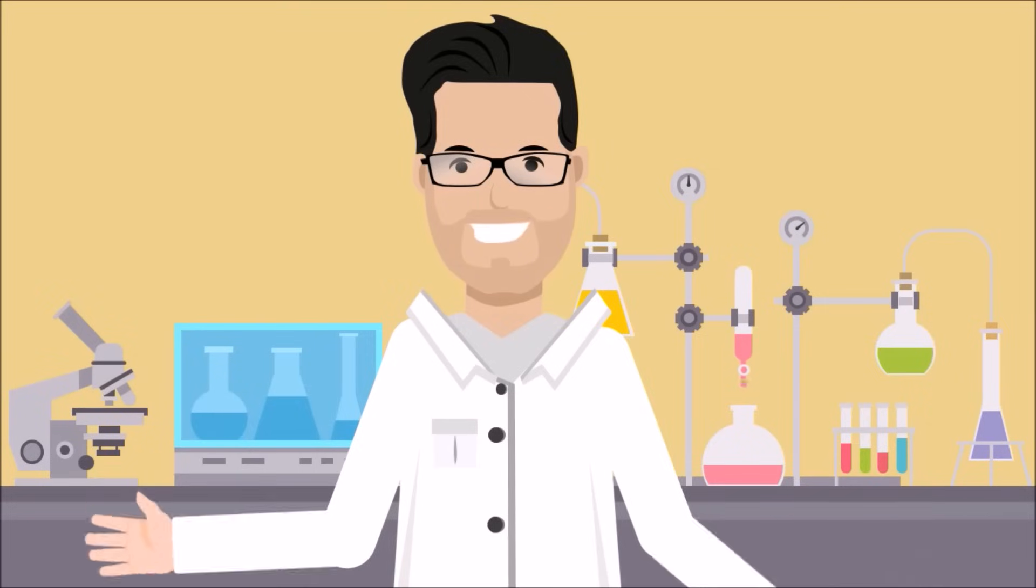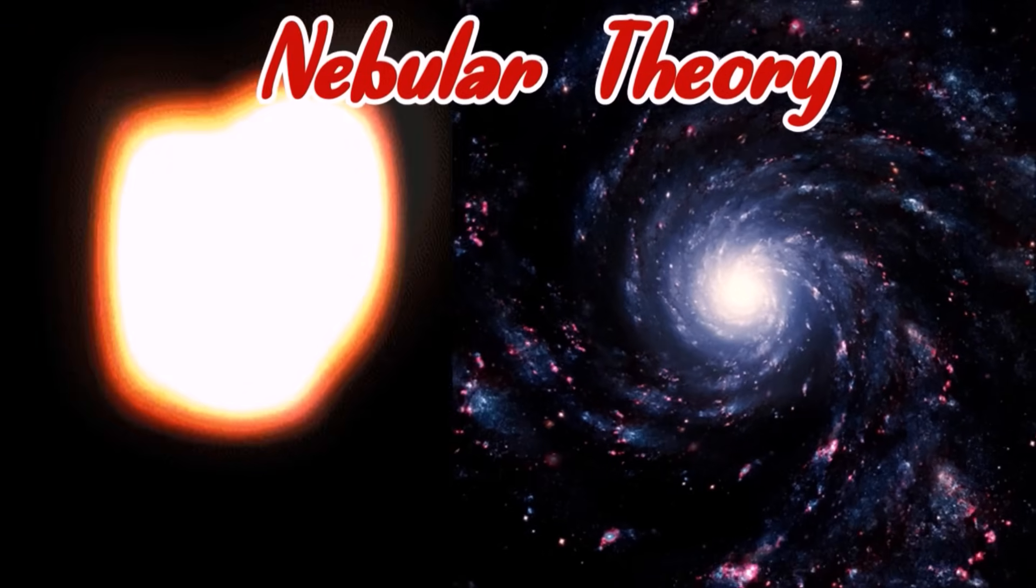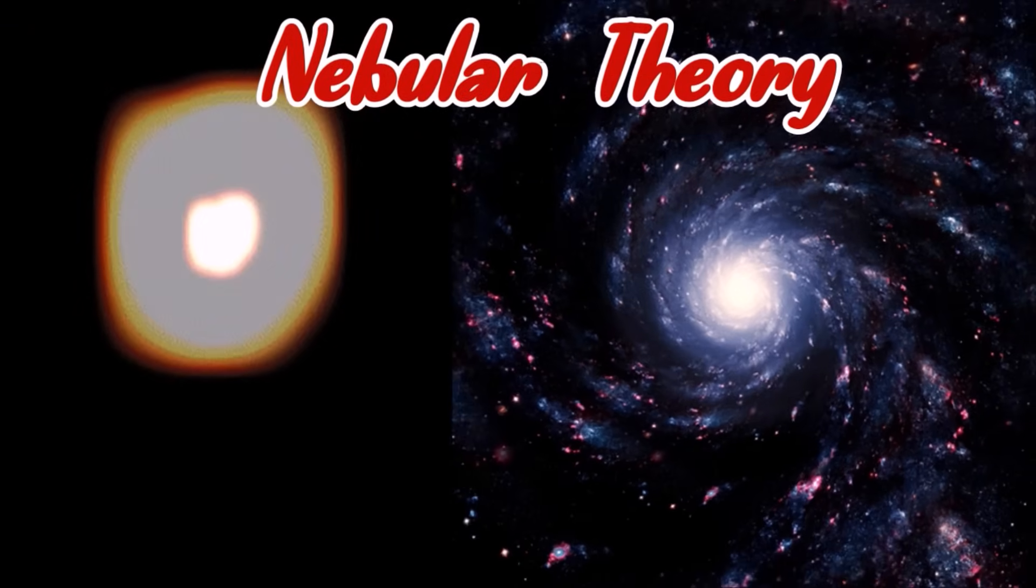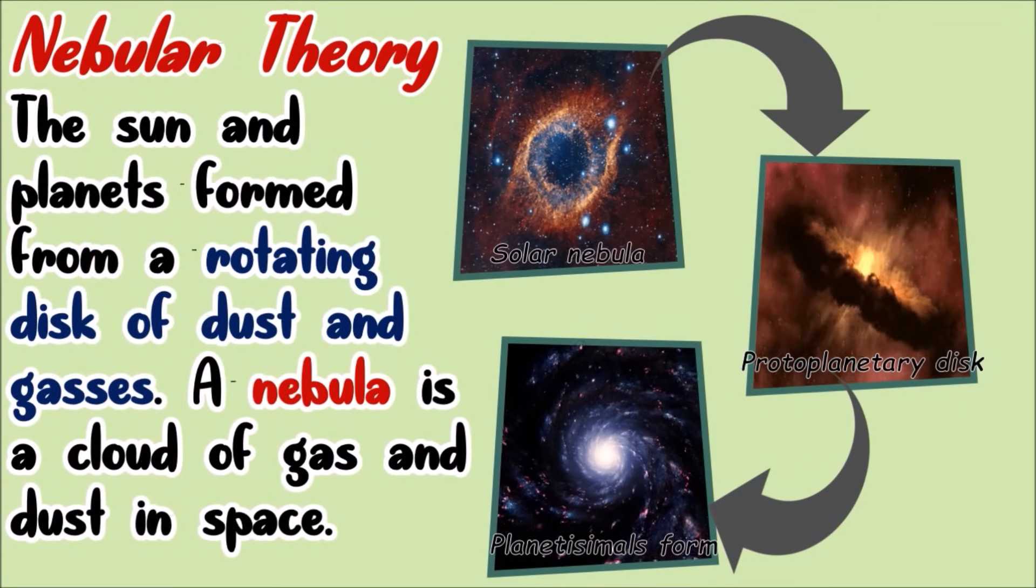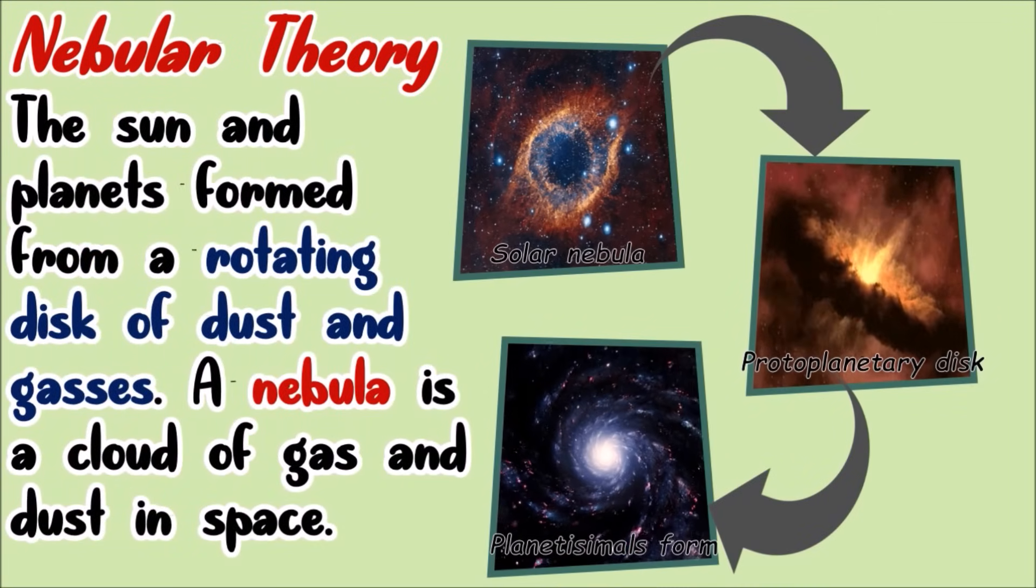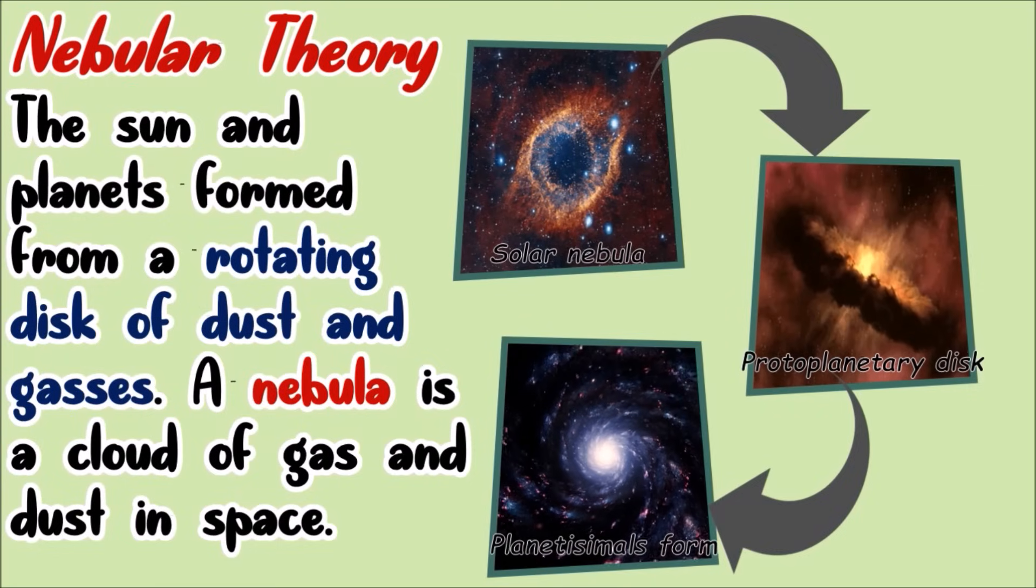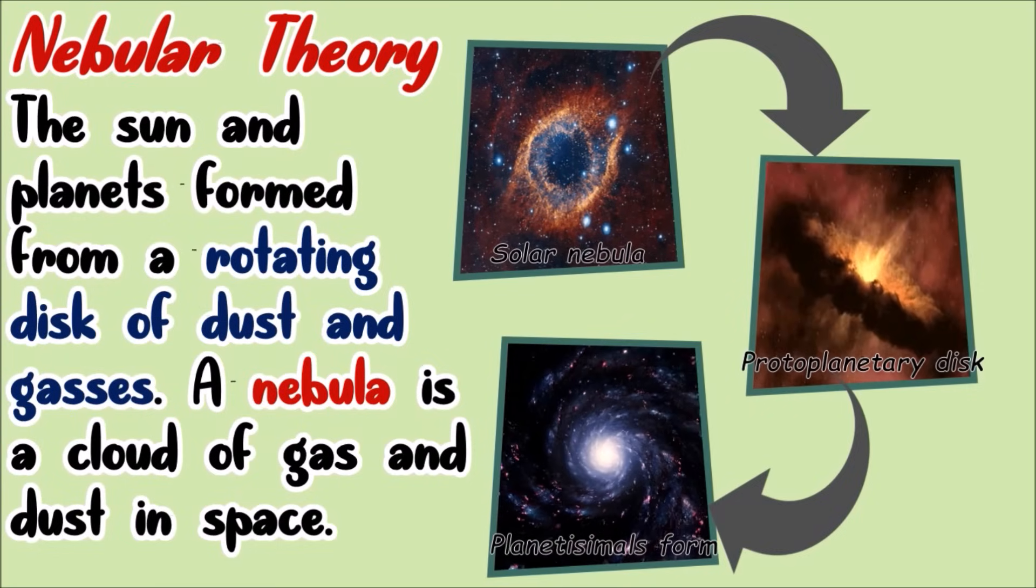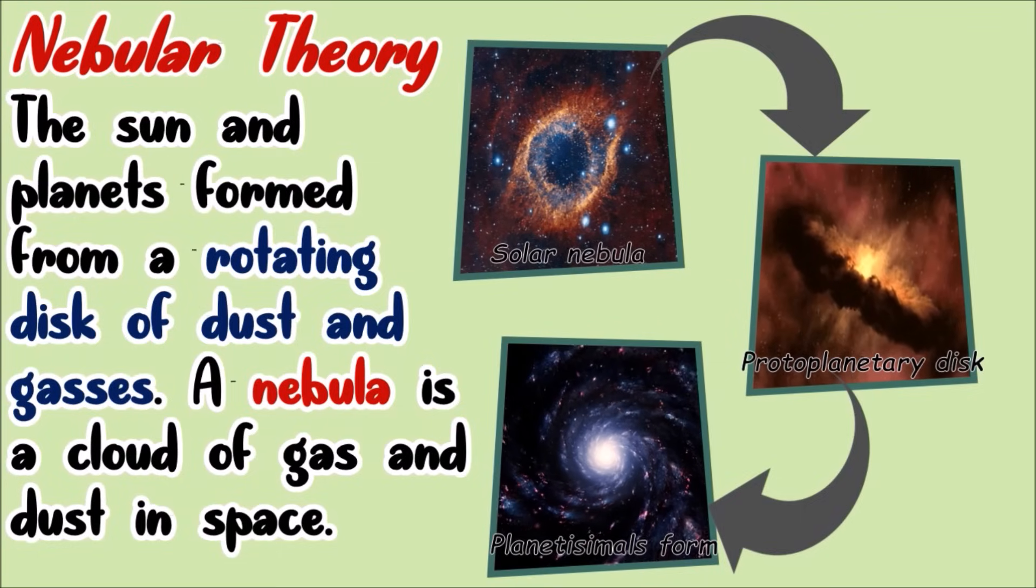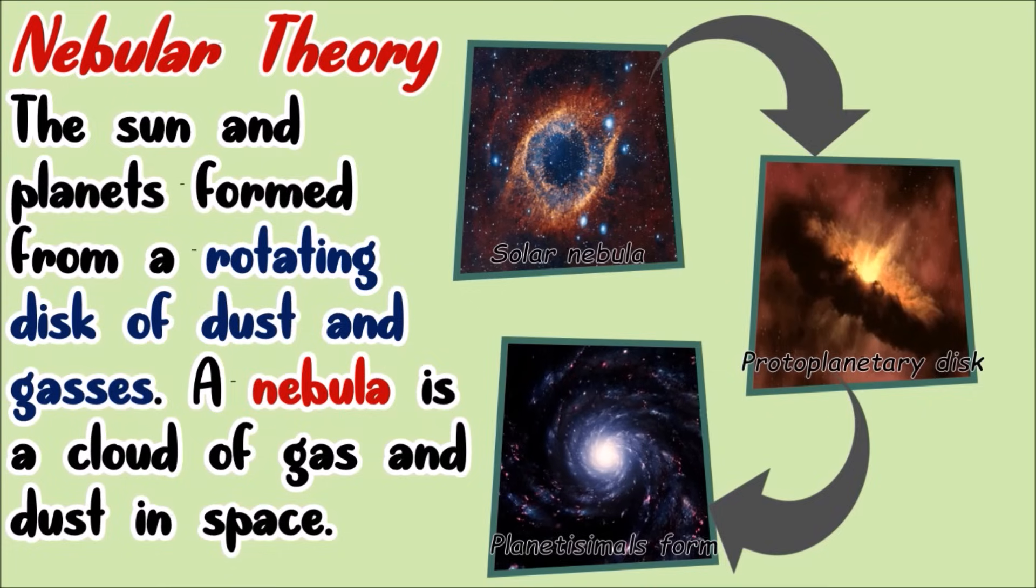There are several theories that explain how planets form. Some of these are nebular theory. According to the nebular theory, the sun and planets are formed from a rotating disk of dust and gases. A nebula is a cloud of gas and dust in space. And after a very, very long time, they will form heavenly bodies.